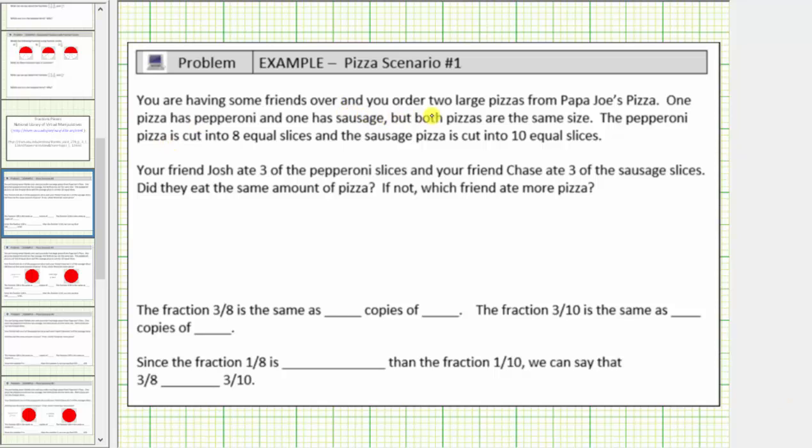You are having some friends over and you ordered two large pizzas from Papa Joe's Pizza. One pizza has pepperoni and one has sausage, but both pizzas are the same size. The pepperoni pizza is cut into eight equal slices and the sausage pizza is cut into ten equal slices.